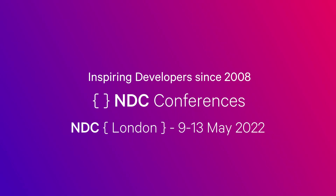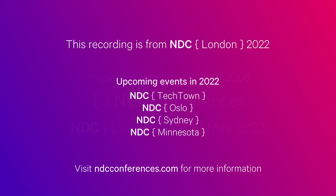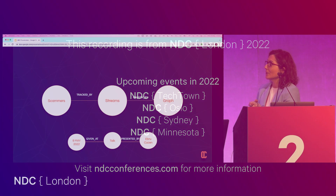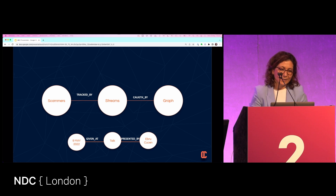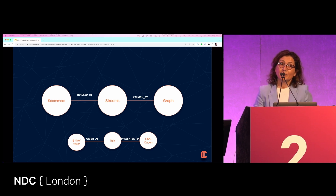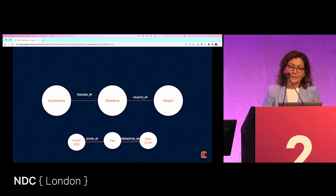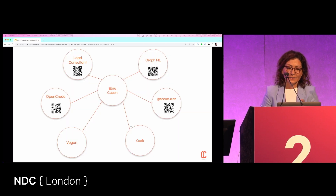Today I'm going to talk about skimmers — how we track them on the streams and code using graphs. It's a talk for NDC that I prepared based on a project that I did. It's a simple use case of it.